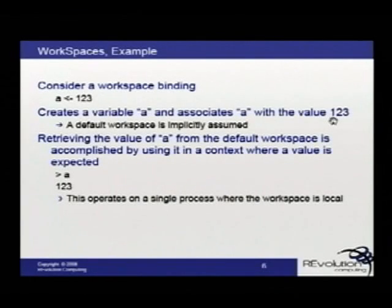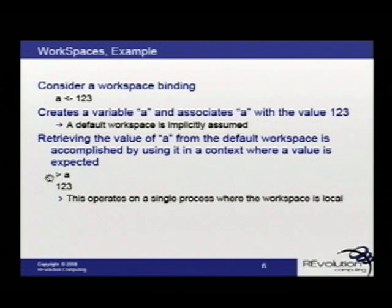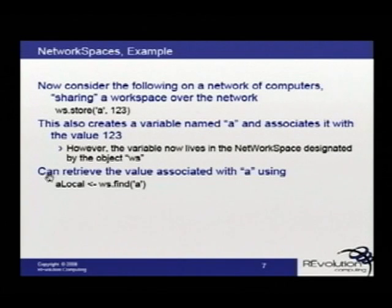Let's take an example. If we think about a simple workspace, we can define variable A and assign values 1, 2, and 3 to it — this creates A in the workspace. We can retrieve A using common R syntax, and it returns the values 1, 2, and 3. This requires that the data is local and can only be done serially. Now if we expand this to a network workspace, we define a workspace WS and store A on that workspace. A is now associated with values 1, 2, and 3 but lives somewhere out on the network.